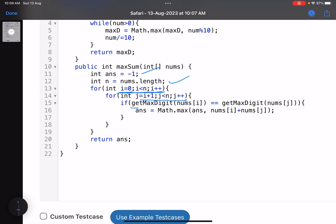Now I have created a utility function getMaxDigit of nums[i]. If that is equal to the max digit in nums[j], that means it's a valid pair. So just try to update your answer if you have to. Answer equals Math.max of answer, nums[i] plus nums[j].